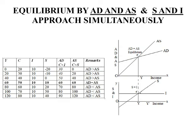We will now discuss simultaneous equilibrium using both the AD-AS approach and the S&I approach. In the table, AD and AS are shown together. At the income level of 60, AD and AS are equal, so S and I are also equal. In the diagram, the AD-AS approach shows point E as the equilibrium point where AD and AS are equal. In the lower part of the diagram, at point E, S and I are also equal. This demonstrates simultaneous equilibrium by both the AD-AS and S&I approaches.